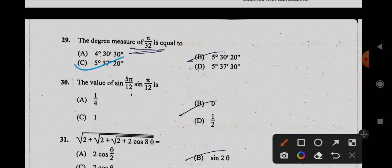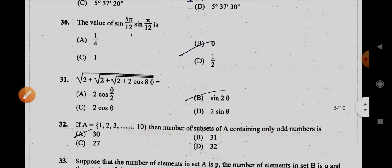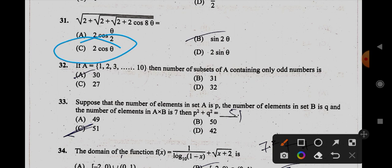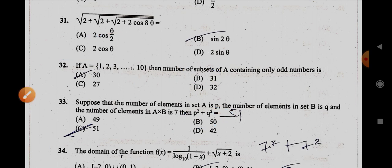30th option, it is A. 31st, it is 2 cos theta. 32nd, it is B, that is 31. And 33rd, the option is B, it is this one.